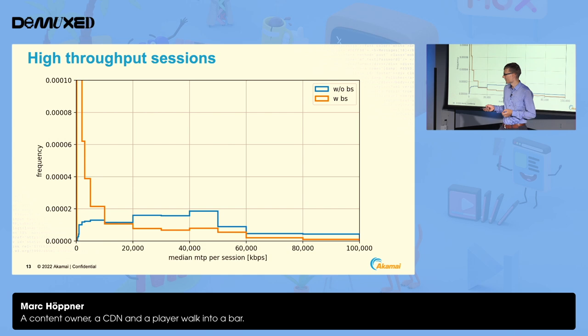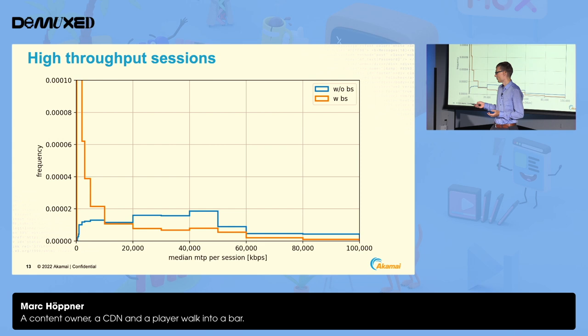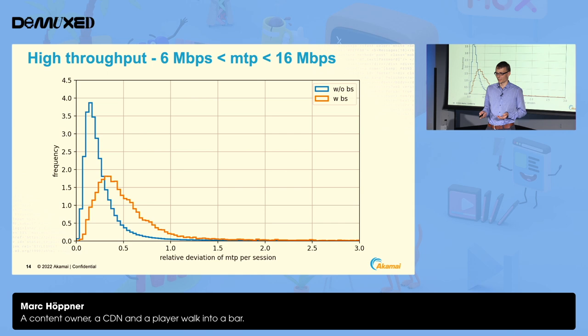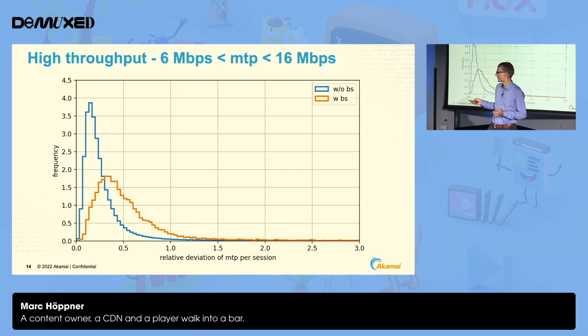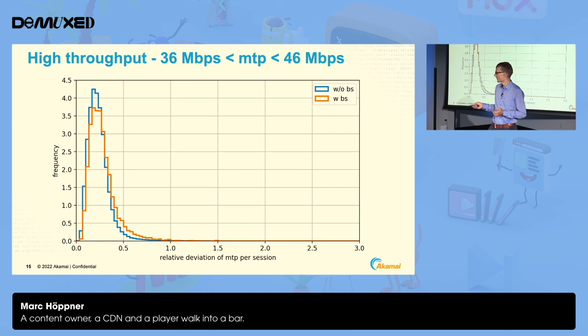Now let's look at the high throughput case, which is more interesting. You'd expect sessions with median throughput of 40 to 60 megabits per second to be fine, yet they still experience a buffer starvation event at some point during the session. Looking at relative change in measured throughput versus relative frequency — broken out for sessions with and without buffer starvation — even in the 6 to 60 Mbps window there is a small shift between the two groups. At very high throughput, the distributions converge and overlap. So fluctuating throughput is probably not the cause.